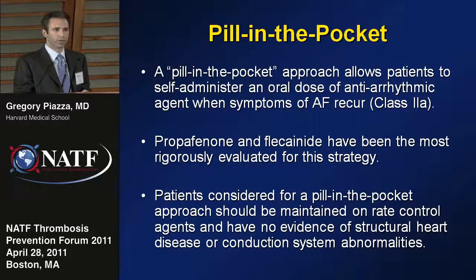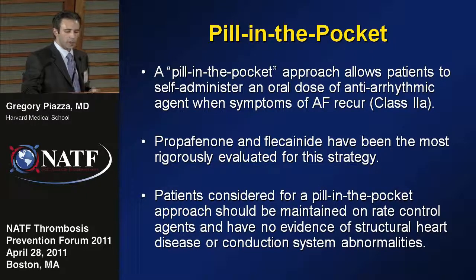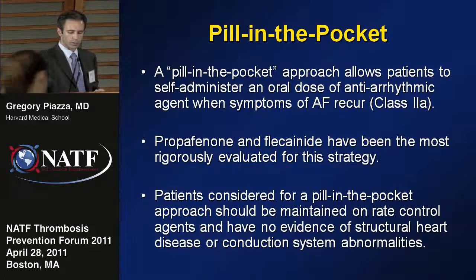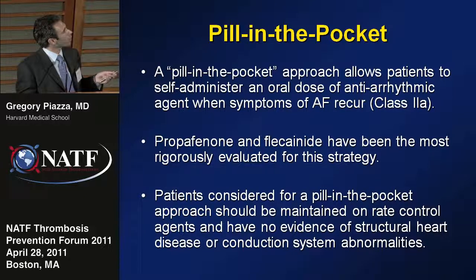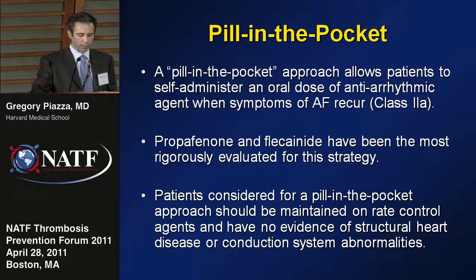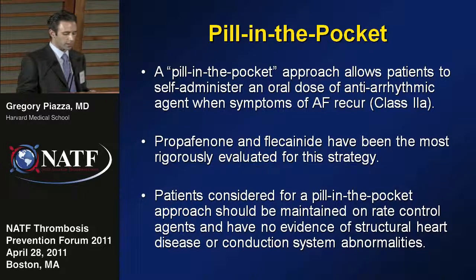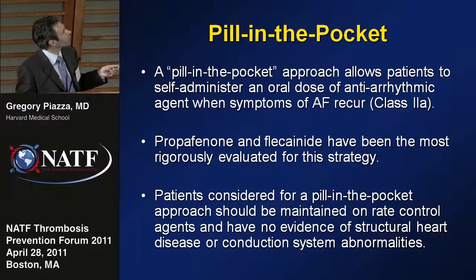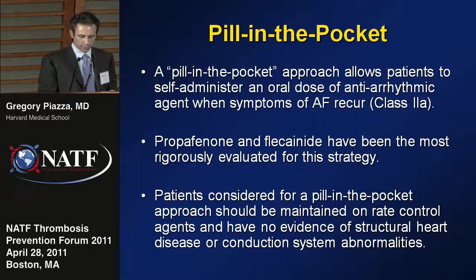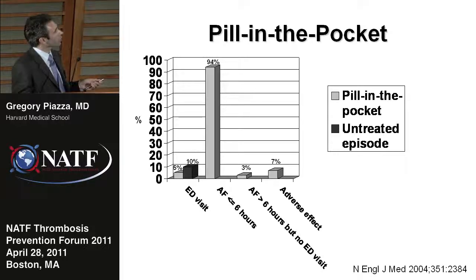The pill-in-the-pocket strategy allows patients to self-administer an oral dose of an antiarrhythmic agent when symptoms of atrial fibrillation recur. Propafenone and flecainide have been the most rigorously evaluated for this strategy. Patients considered for this approach should be on a rate control agent and have no evidence of structural heart disease or conduction system abnormalities. A pill-in-the-pocket approach reduces emergency room visits by half, reduces the length of atrial fibrillation episodes to six hours or less, and the rate of adverse drug events is quite low.